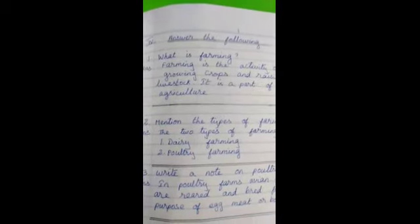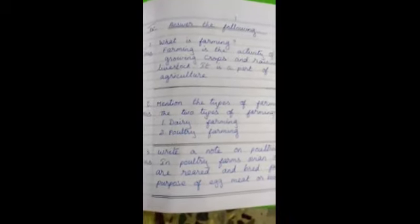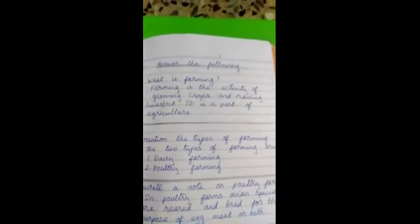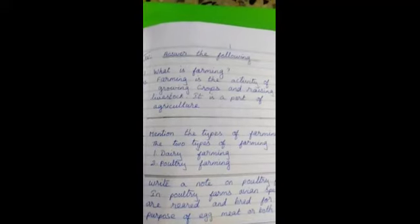Yes. Leave one line and put number two. Mention the types of farming. Answer, the two types of farming are dairy farming, poultry farming. You have finished the second one.